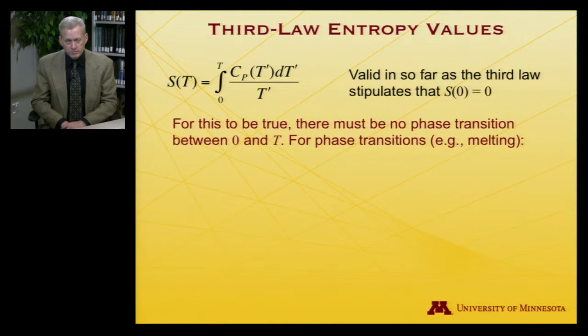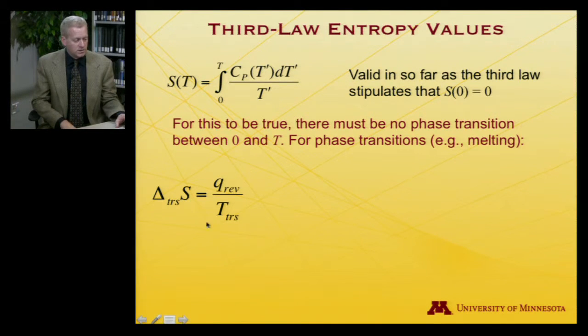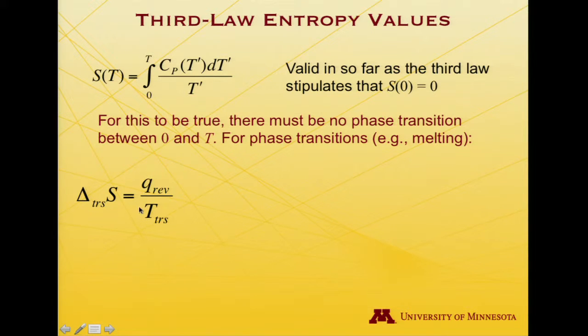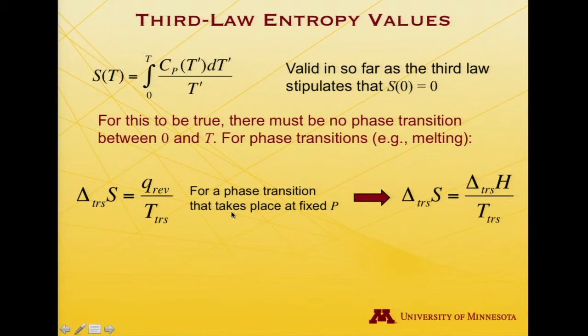Now, for this expression to hold, there is one last stipulation, and that is that there be no phase transition of the substance between zero and the target temperature T. If there is a phase transition, for example, if you go from a solid to a liquid phase, you melt, then we have to account for the entropy change associated with that. And because phase transitions are reversible processes, that means that the delta S associated with that phase transition is going to be the amount of heat that goes into the process divided by the temperature at which the phase transition takes place. And so if it takes place at fixed pressure, then the fixed pressure heat transfer is equal to the change in enthalpy. And so delta S for a transition is equal to delta H for a transition over the temperature at which it occurs.